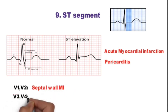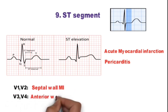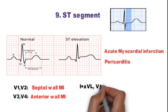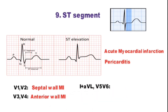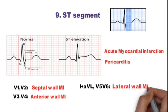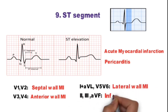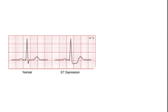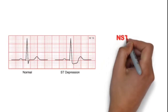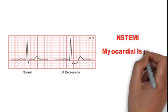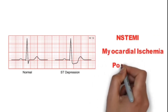In V3-V4 it is anterior wall MI. In lead 1, AVL, V5, V6 it is lateral wall MI. And in lead 2, lead 3, and AVF it is inferior wall MI. ST segment depression is seen in subendocardial ischemia, myocardial ischemia, and posterior wall MI.